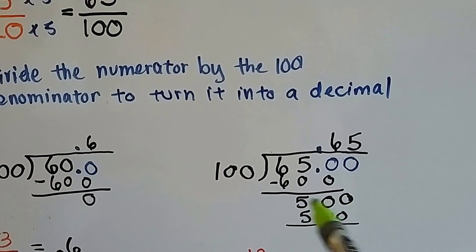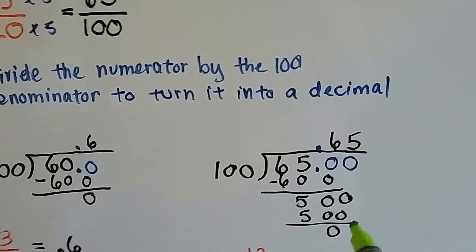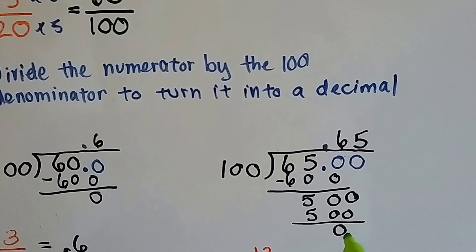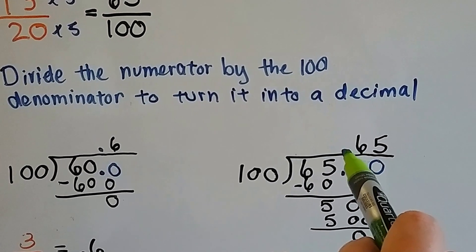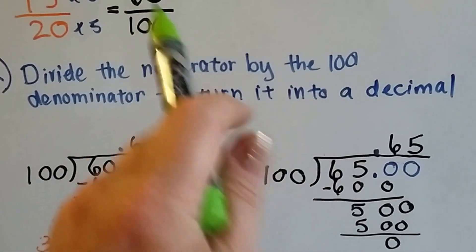We add another zero, drop it down. 100 goes into 500 five times with a zero remainder after we subtract. And now we're at .65 for this one.